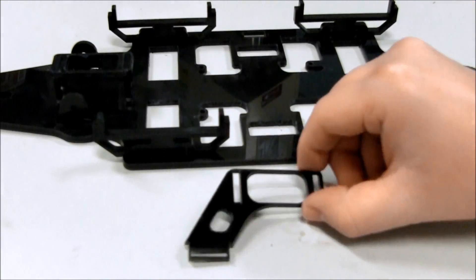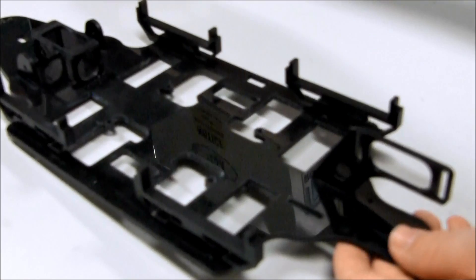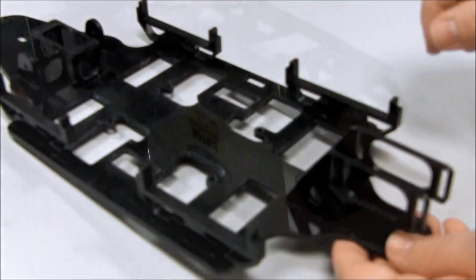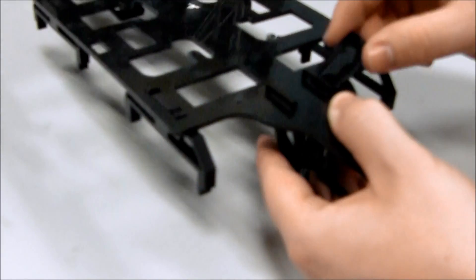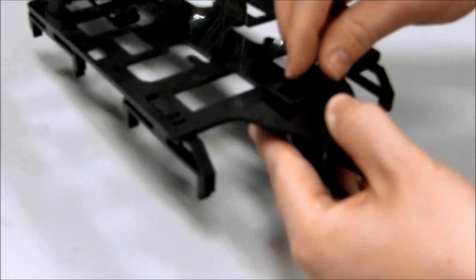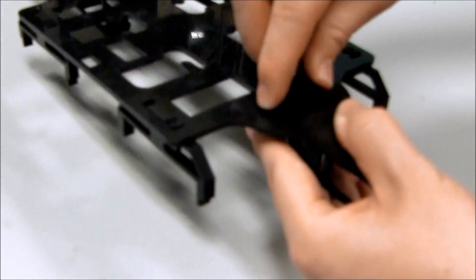Next we will insert the tail servo plates as shown here. Insert the tail servo plates into the two slots. Take one tail tab and lightly squeeze it to place it inside the slots under the tail servo plates.